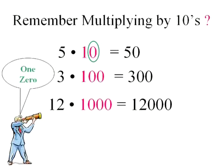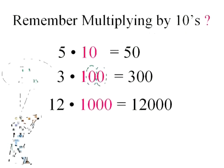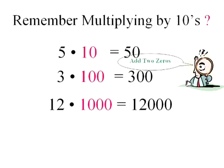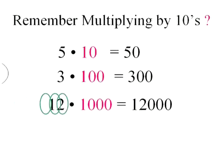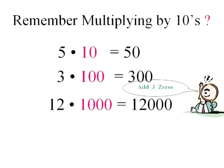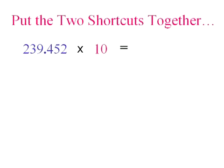Note, one zero when I multiply by ten. And I just added one zero. Two zeros when I multiplied by a hundred. And I just added two zeros. There's a pattern here. Three zeros when I multiplied by a thousand. And I kind of just added three zeros, didn't I?